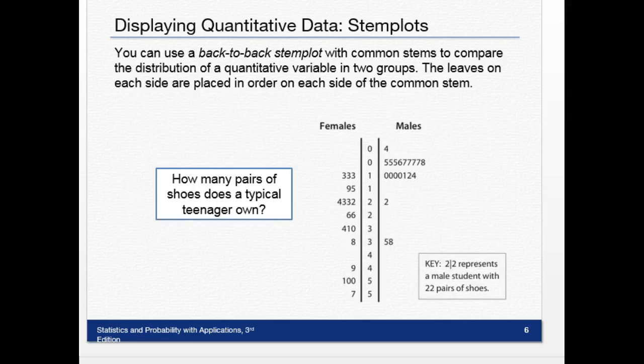Sometimes we can use what's called a back-to-back stem plot with common stems to compare the distribution of a quantitative variable in two groups. The leaves on each side are placed in order on each side of the common stem. In this example, looking at how many pairs of shoes does a teenager own, we're comparing females and males. The stems stay the same for both of them—there's two zeros, two ones—and then you build your leaves out for males on the right and females on the left. This is what you call a back-to-back stem plot.